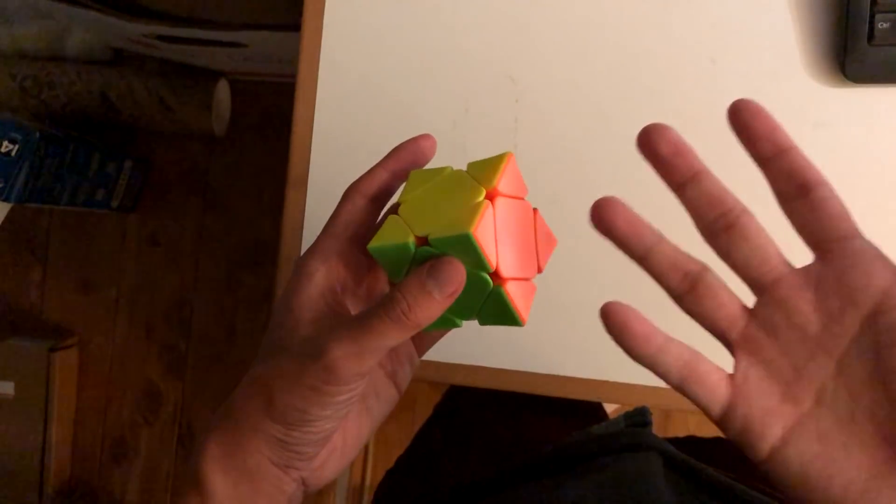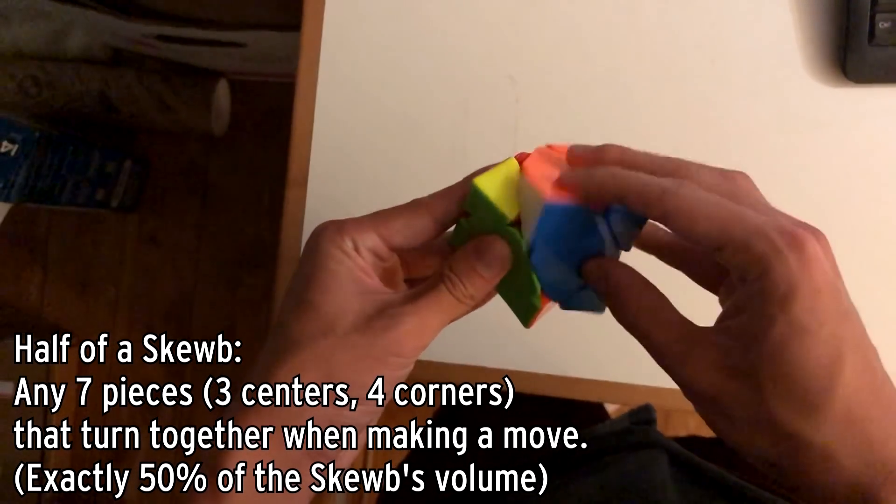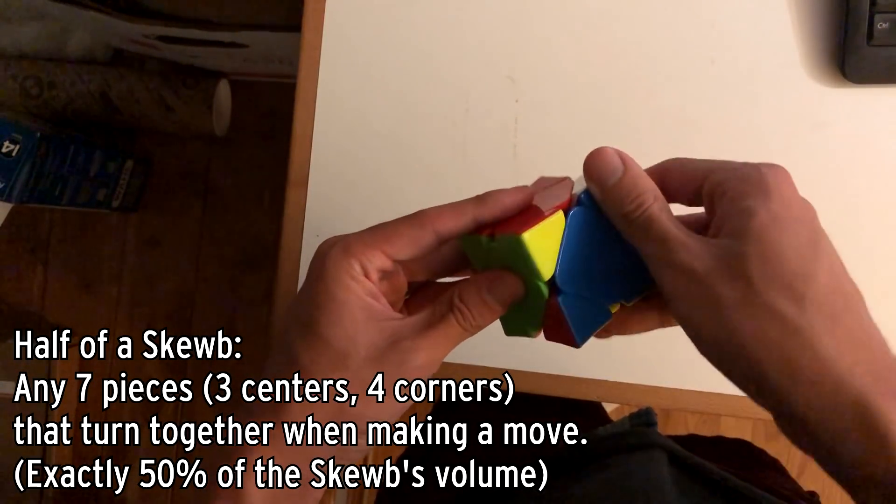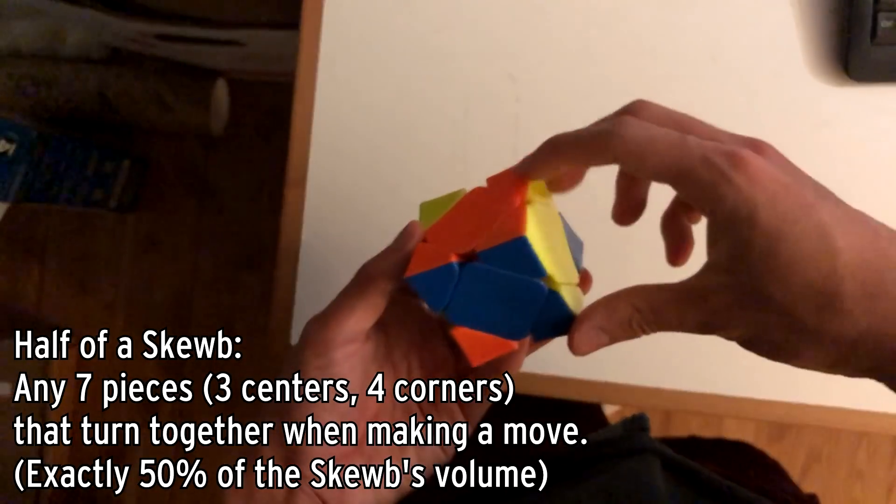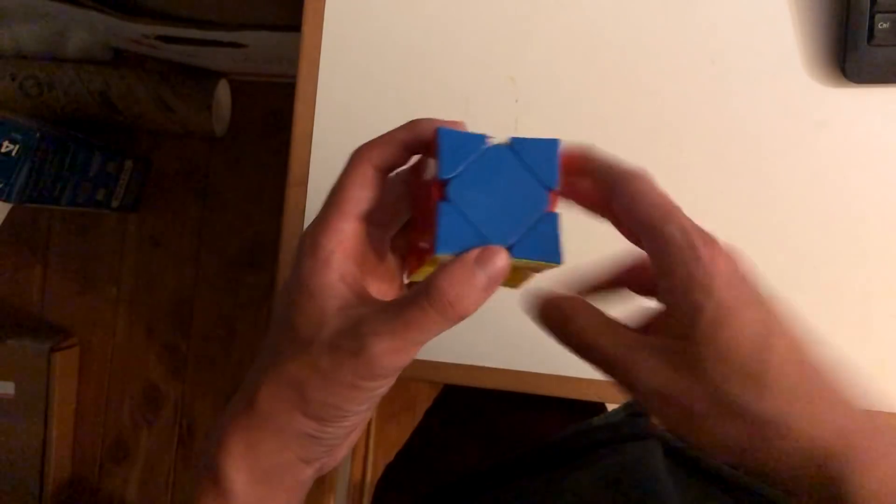So first of all, what is half a SCUBE? Well, whenever you make any turn on the SCUBE, it divides the SCUBE exactly in half volume-wise. So let's just call any chunk that turns together like this, half. So this chunk up here is half of a SCUBE, and this chunk down here is also half.